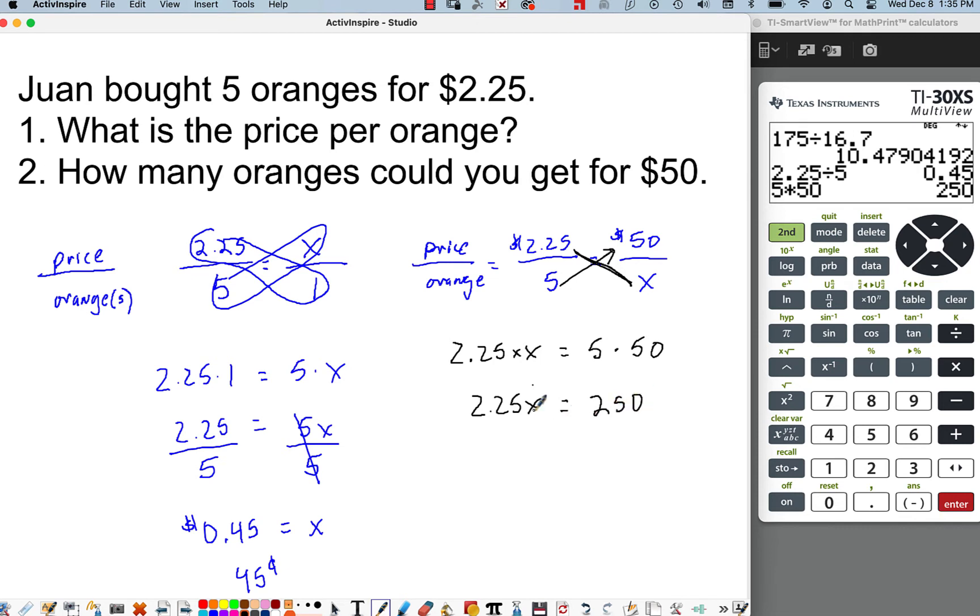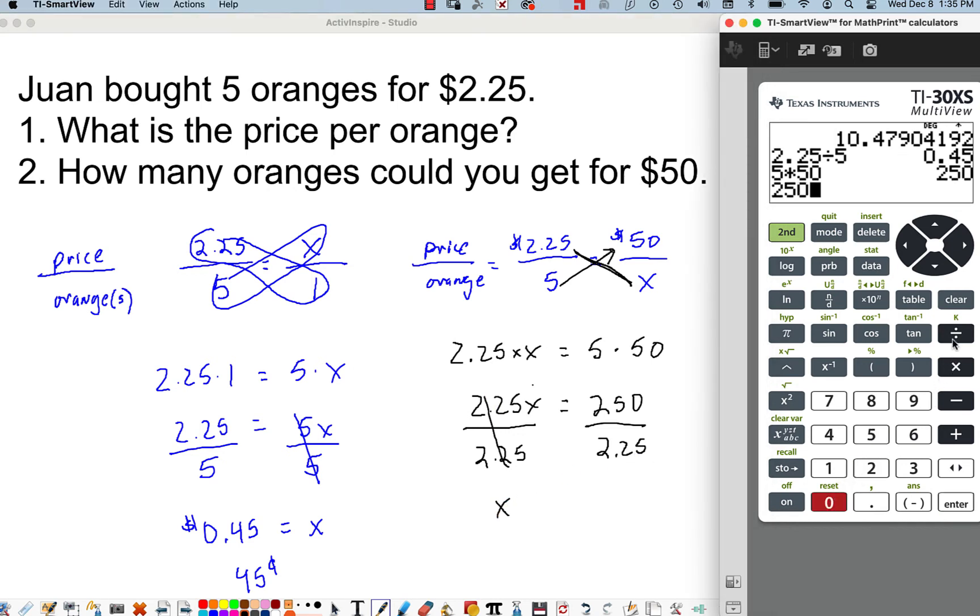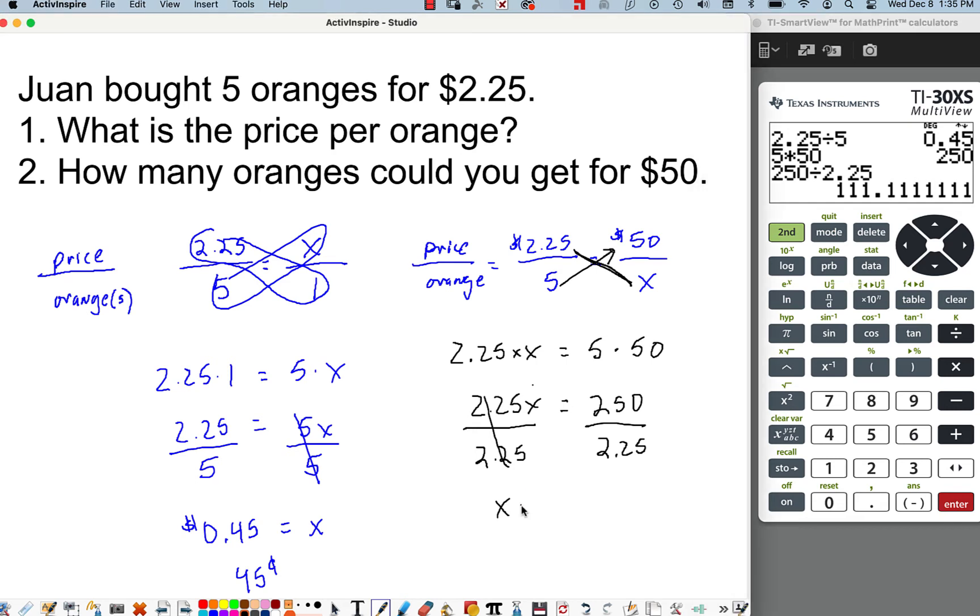So there's 250. So now again, we want to isolate x. So we're going to divide by what's being multiplied by x, which is $2.25. So we're going to divide 250 by 2.25. So 250 divided by 2.25 equals, that's roughly, we would have enough for 111 oranges. We can't round up. So again, that is, we're sort of diving into ratios here, but a unit rate is a ratio.